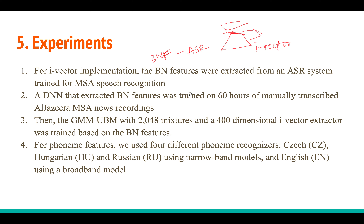They use an MSA speech recognition model trained on Al Jazeera's dataset, with a bottleneck layer added to extract features for all training data. They train a GMM-UBM model with many mixtures and a total variability matrix to get 400-dimensional i-vectors. The i-vector extractors are trained with bottleneck features. This is the baseline.